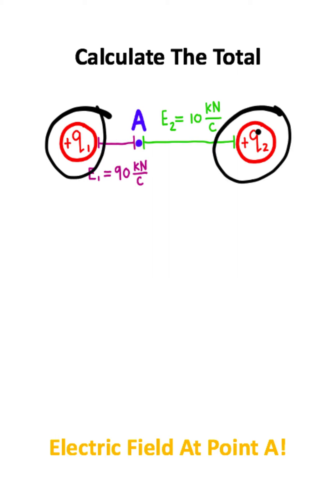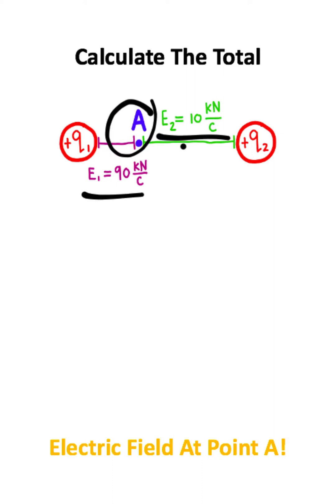So we have two positive charges, and each of these positive charges create their own electric fields. We are given the magnitudes of each of the electric fields with respect to point A. What we want to know is what the total electric field is at point A.